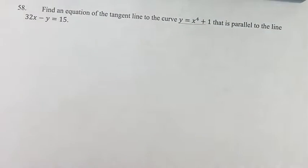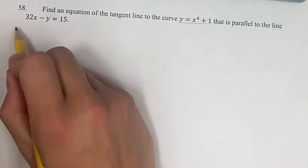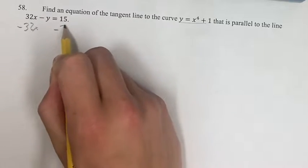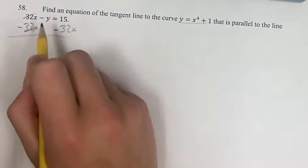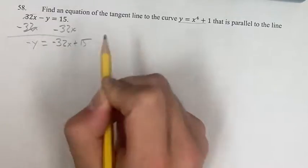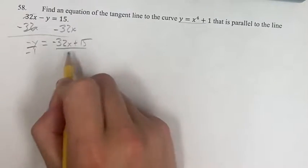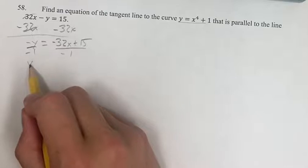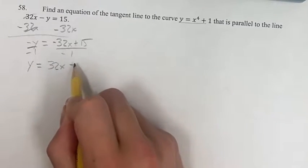So that means they're going to have the same slope. First, we're going to want to find the slope of this line. Let's get it in slope-intercept form. Subtract 32x from both sides. These will cancel out. We get negative y equals negative 32x plus 15. Divide both sides by negative 1 to get y on its own, and we get y equals 32x minus 15.